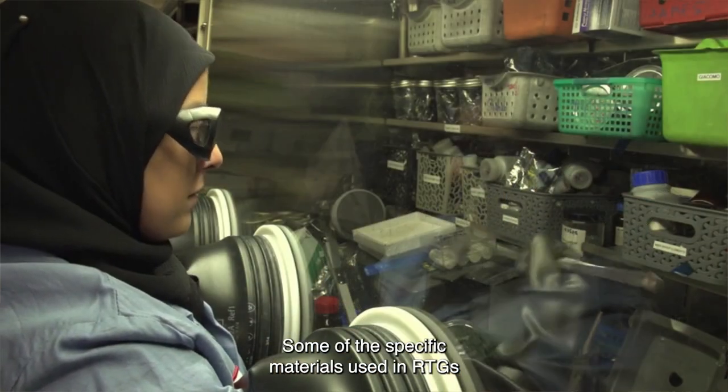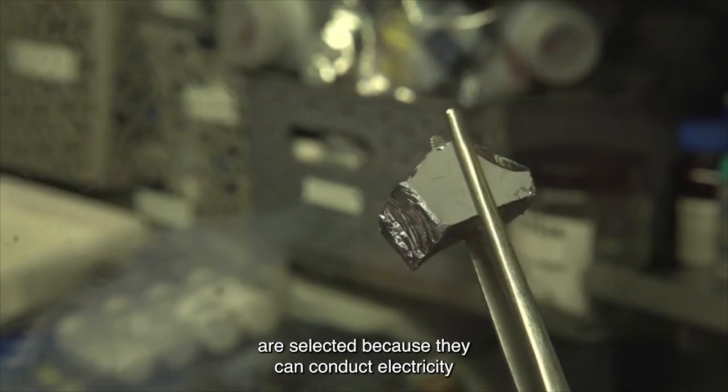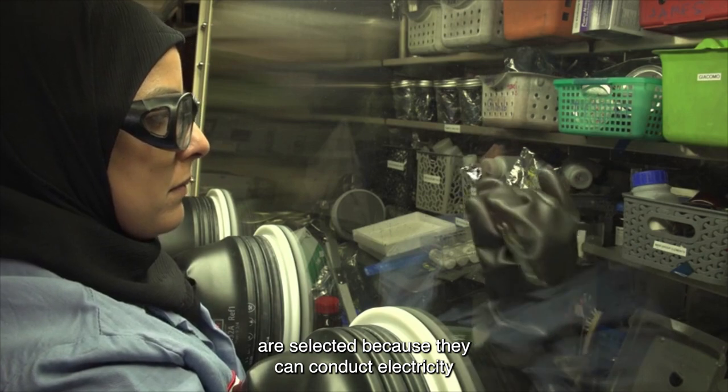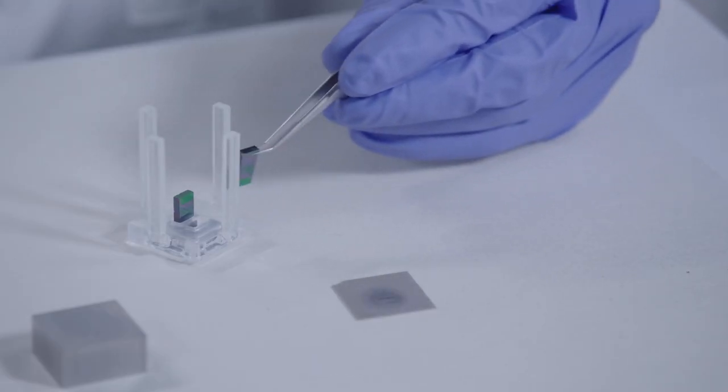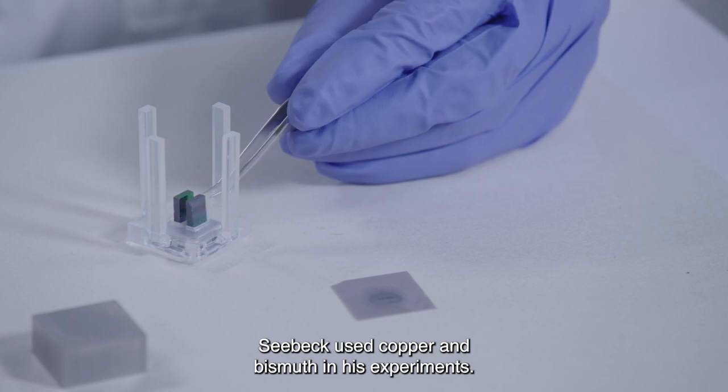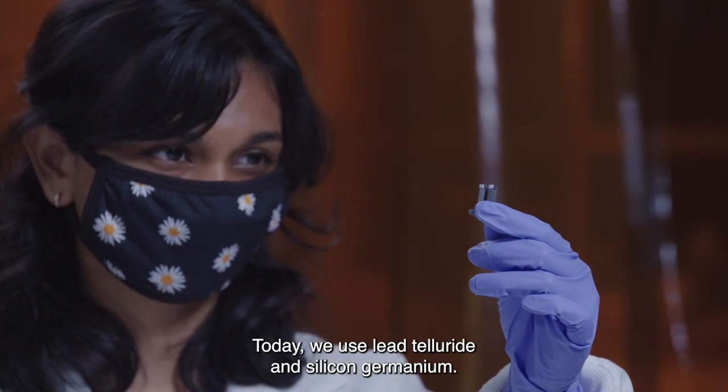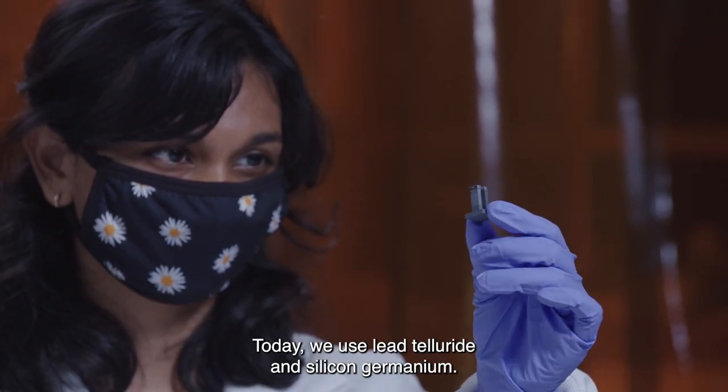Some of the specific materials used in RTGs are selected because they can conduct electricity as well as maintain a hot and a cold side. Seebeck used copper and bismuth in his experiments. Today we use lead telluride and silicon germanium.